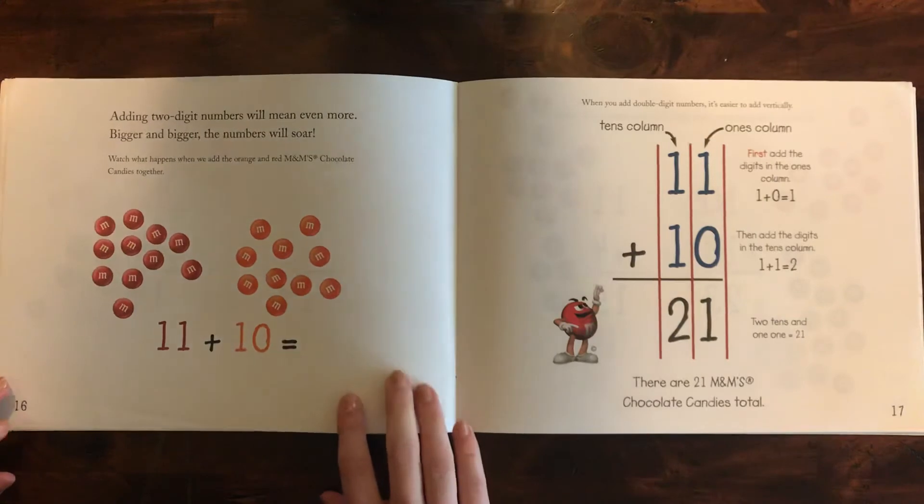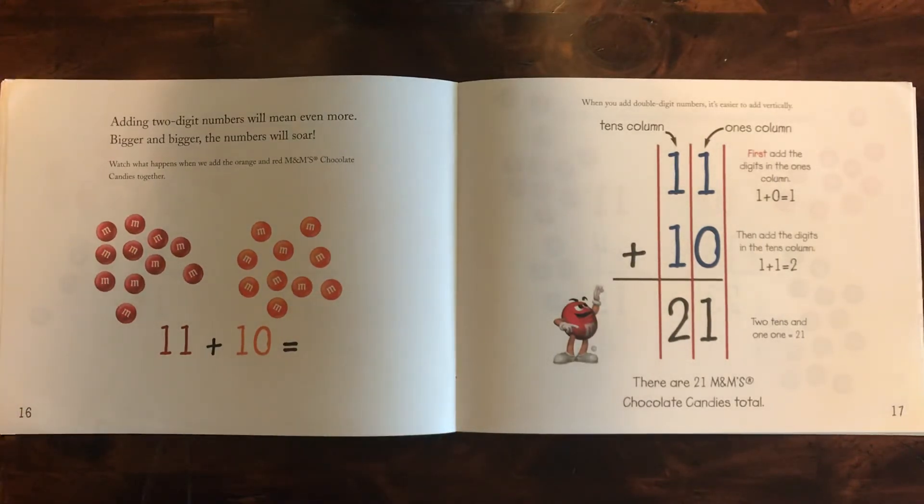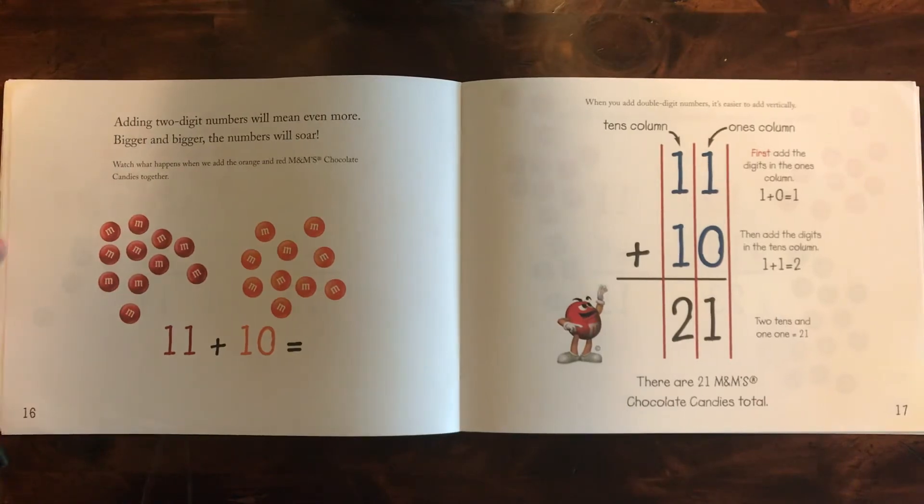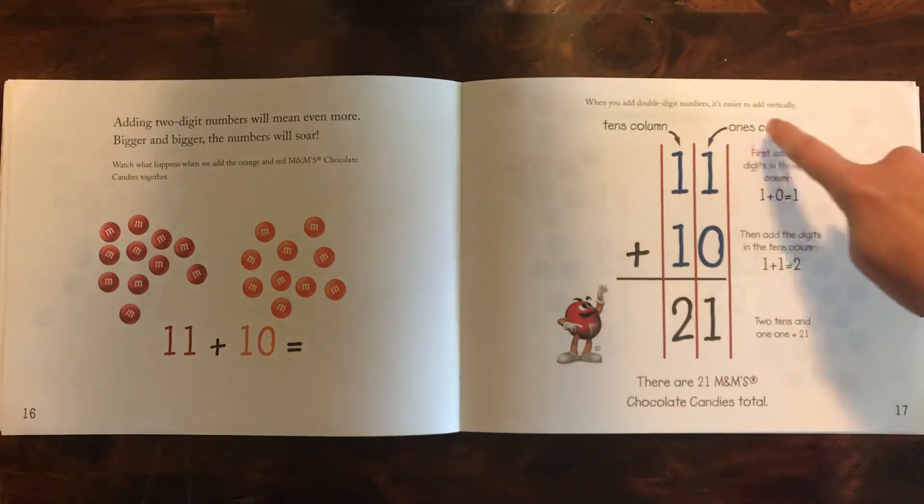Adding two digit numbers will mean even more. Bigger and bigger the numbers will soar. Watch what happens when we add the orange and red M&Ms together. So we have 11 plus 10. It's going to tell us how to do right over here. When you add double digit numbers, it's easier to add vertically, so we put them on top of each other.